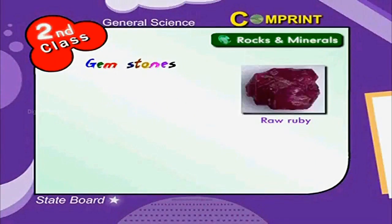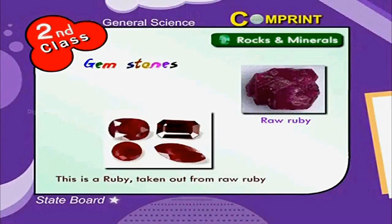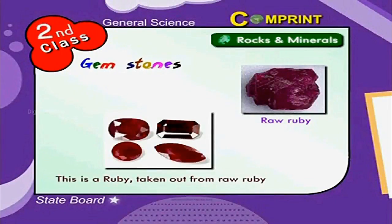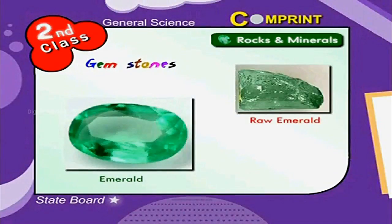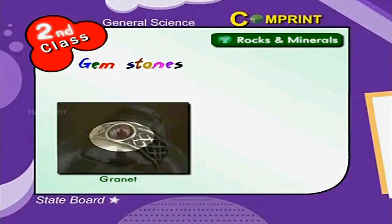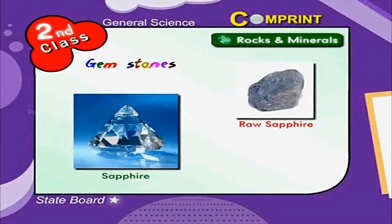This is raw ruby, and this is ruby taken out from raw ruby. Emerald. Raw emerald. Granite. Raw granite. Sapphire.